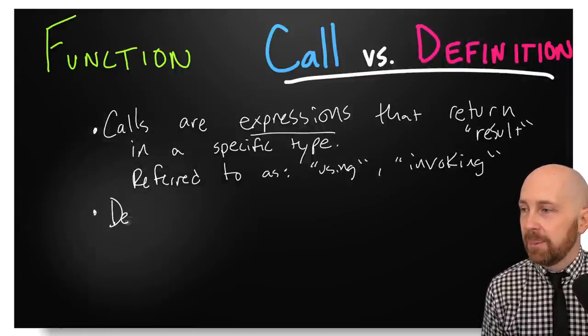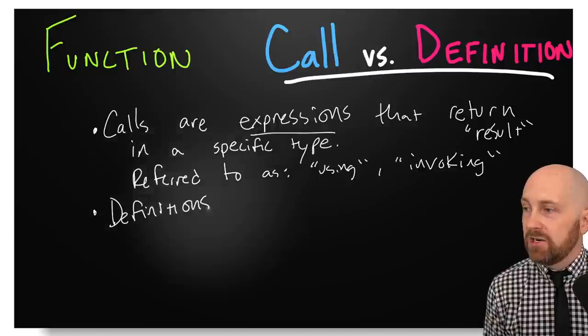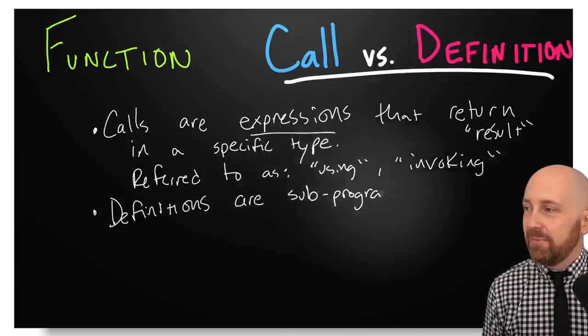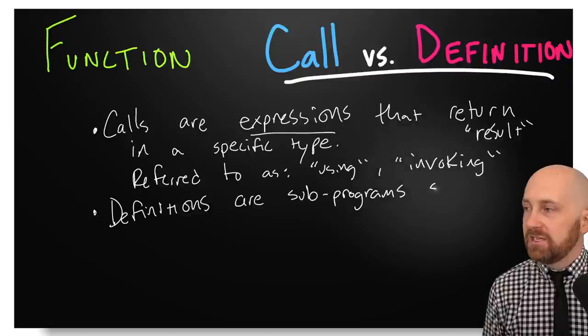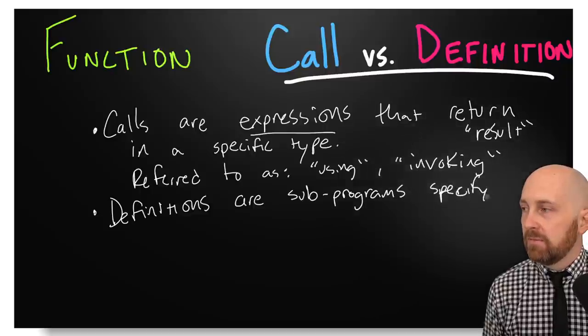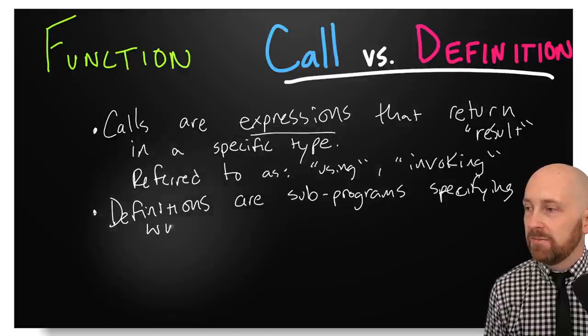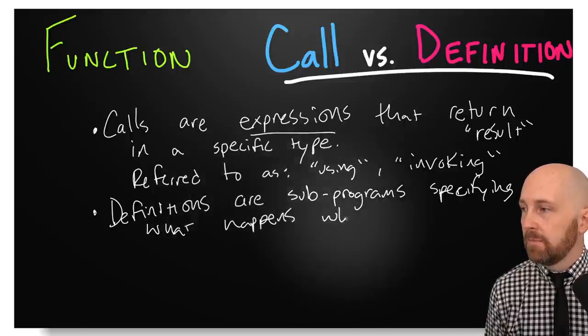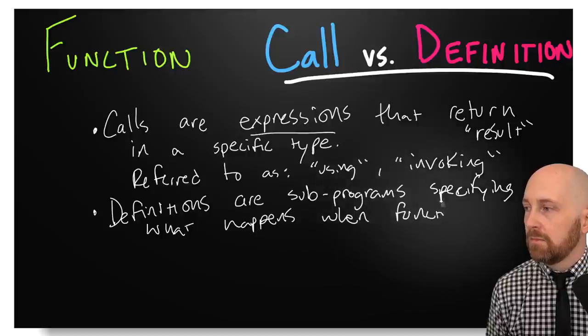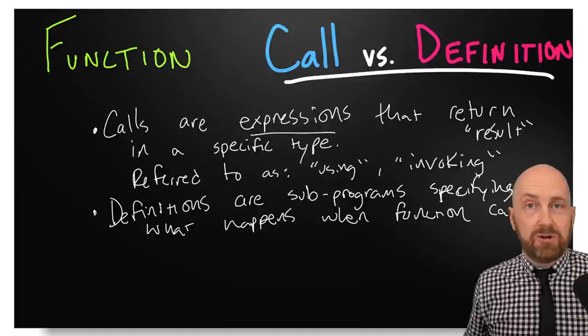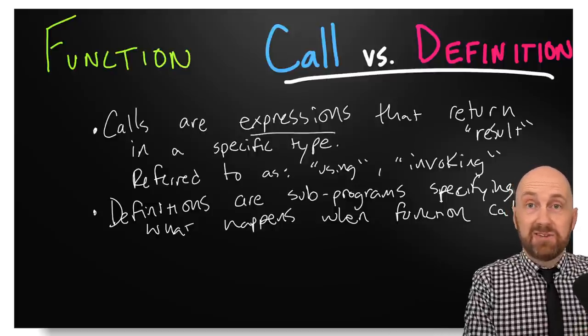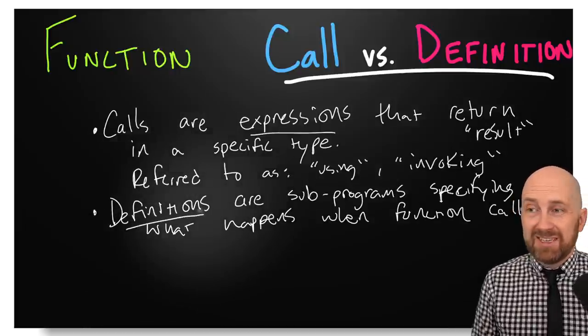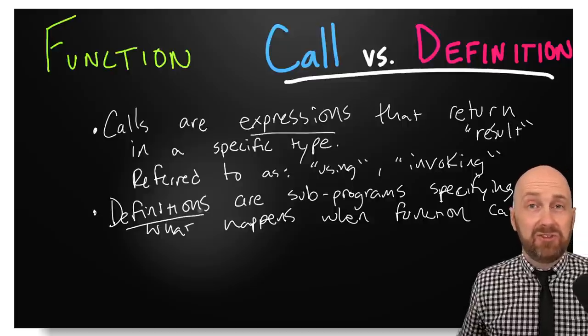So definitions are sub programs that define what actually happens, specifying what happens when a function is called. This is the recipe. And so this is just like when you order a pizza behind the scenes, the chef is going to be carrying out and following the instructions of the recipe or of the definition. Right now, we haven't seen definitions, but we have seen calls. So where do these definitions come from? Primarily, you're going to see them in three places. So the first place that we'll see function definitions are built-ins.